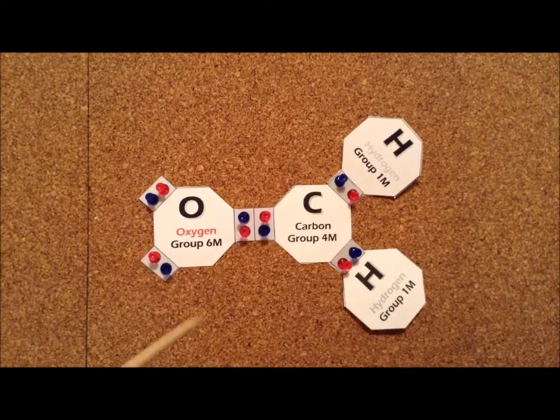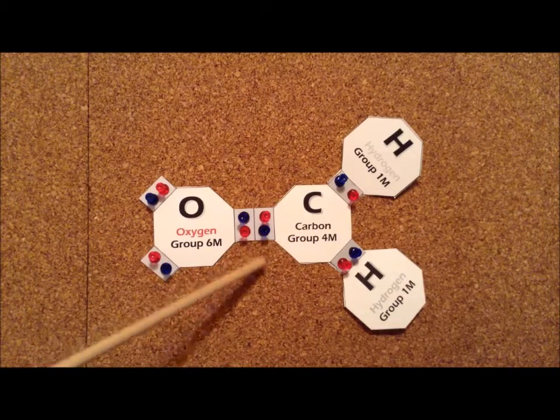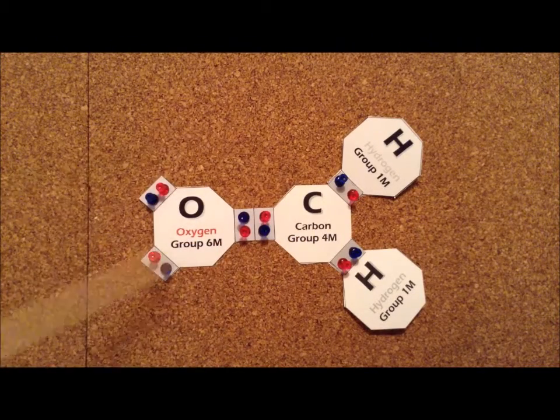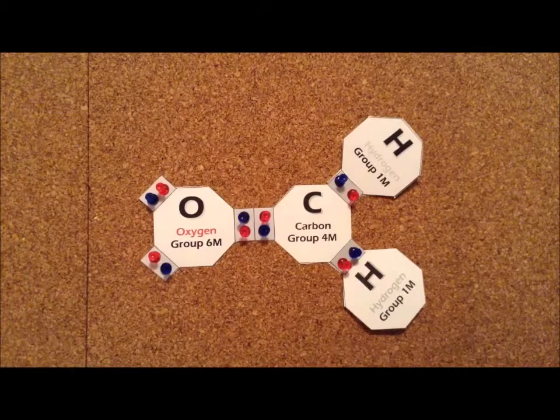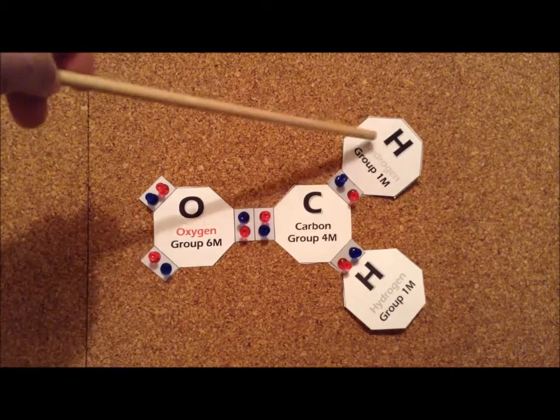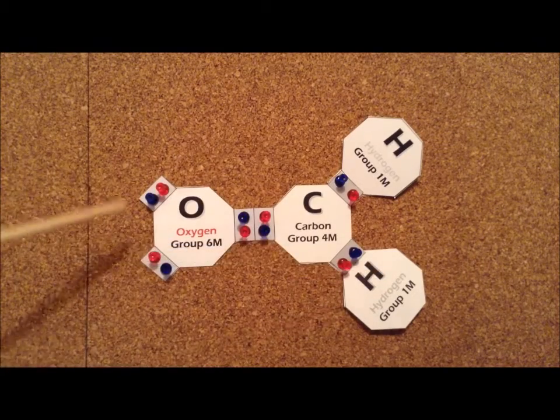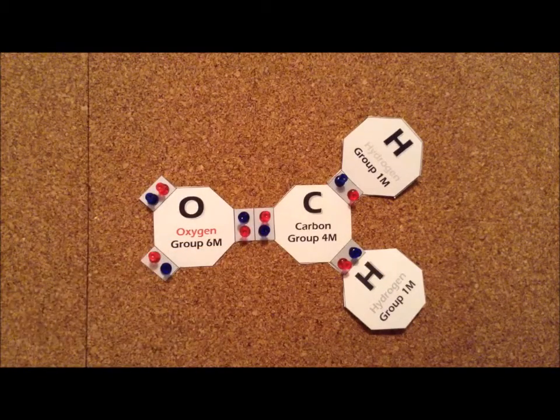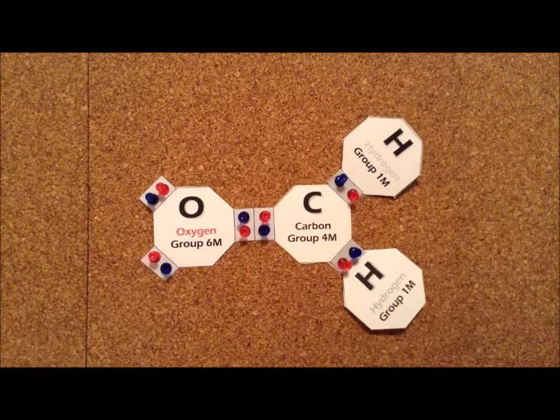The way that we can satisfy the octet and duet rules simultaneously is to have a carbon-oxygen double bond. Types of molecules that have this C double bound to an O, we call this particular group a carbonyl group, and when we have a carbonyl group with hydrocarbons on the side, we call this an aldehyde. So this is the simplest of the aldehydes, formaldehyde.